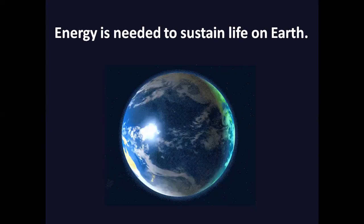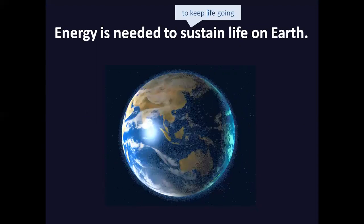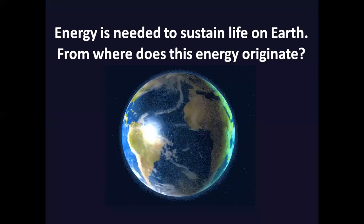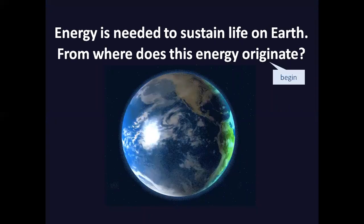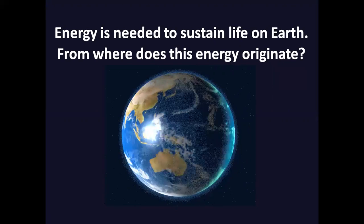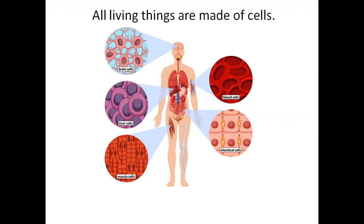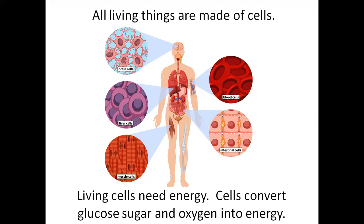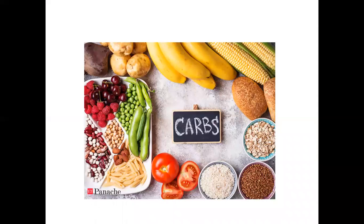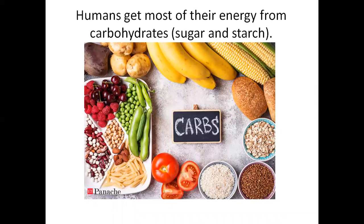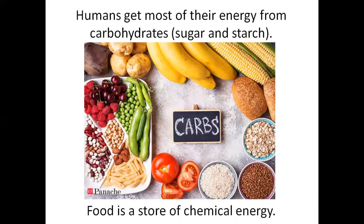Energy is needed to sustain life on Earth. From where does this energy originate? All living things are made of cells, and living cells need energy. Cells convert glucose, sugar, and oxygen into energy. Humans get most of their energy from carbohydrates — sugar and starch. Food is a store of chemical energy.